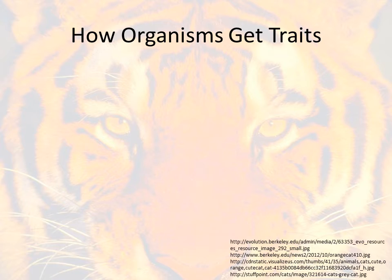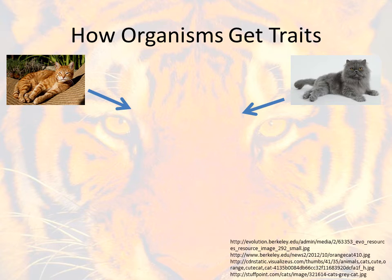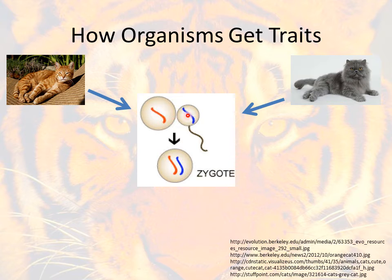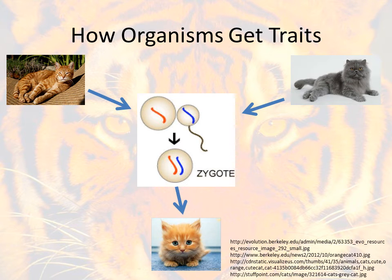It's important to think about how organisms actually get those traits. Using the example of cats: say we've got a cat with orange fur and a cat with grayish fur. Each cat donates one cell during reproduction. The orange mama cat gives one cell and the gray dad cat gives another cell, and when those two single cells combine they make a zygote. Here you can see the gene for orange and the gene for gray combining to make another offspring. The end result is a kitten that has one of those traits — in this case the orange fur, which came from the genes of each parent.